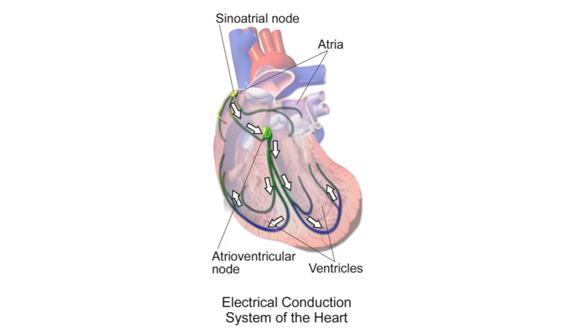Within your heart, you have your SA node, known as the sinoatrial node, that originates in the right atrium of the heart. This is referred to as the pacemaker of the heart. So under normal conditions, the role of the SA node is to fire at a rate of about 60 to 100 beats per minute. This is also controlled by the autonomic nervous system that regulates the heart rate — so it's like an umbrella term.